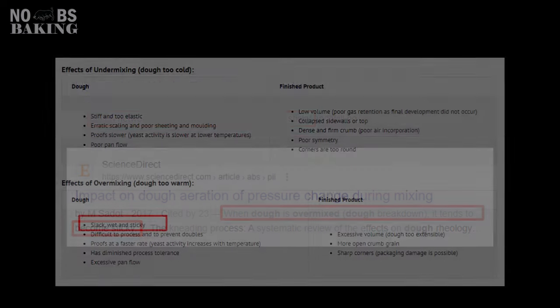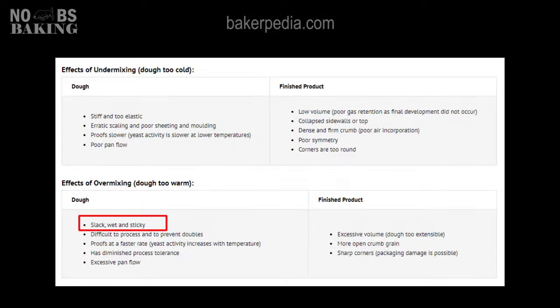And then mixed in with all the clutter you've got the reality check resources that fall totally in line with my experience and schooling. As stated by Bakerpedia, overmixed doughs become soft, extremely extensible, sticky, and can be weak during proofing. Gluten does not become tighter after extended mixing — it breaks down, often resulting in a loaf that is too weak to hold gas properly, may even collapse in the oven, and often has sharp corners when taken from a pan and a weak-looking open grain.